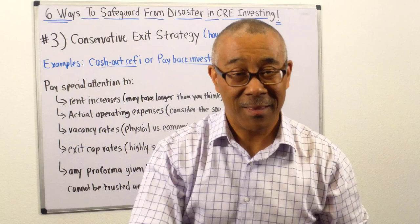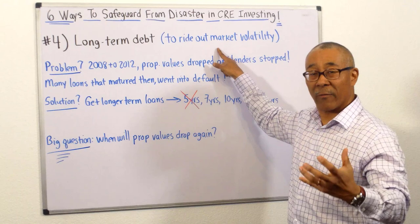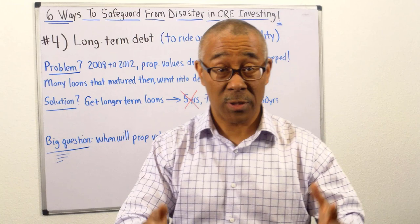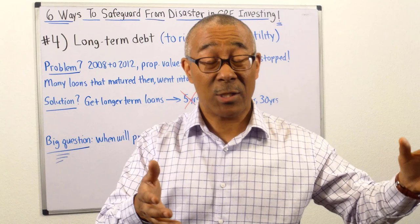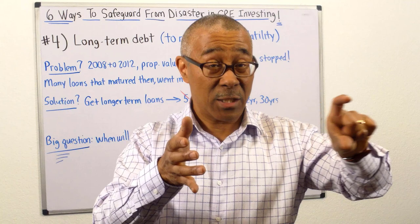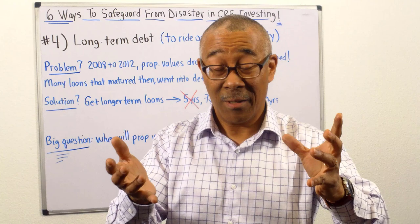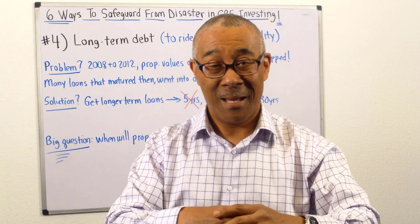Number four is long-term debt — a loan long enough to ride out any market volatility. In residential, you get a 30-year fixed loan. In commercial, the most common loan has payments amortized over 30 years but is due in five years. Banks don't want to be on the hook for 30 years, and they make more money when you refinance every five years. Here's the problem: from 2008 to 2012, property values dropped and many lenders stopped lending entirely.